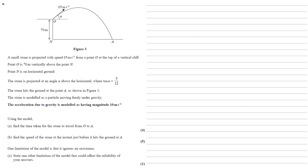The stone is modelled as a particle moving freely under gravity. The acceleration due to gravity is modelled as having magnitude 10 metres per second squared. Using the model, we need to find the time taken for the stone to travel from O to A.